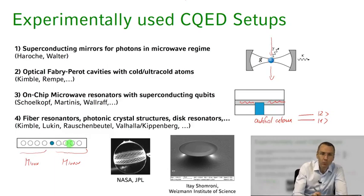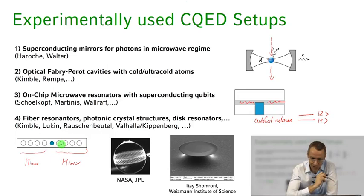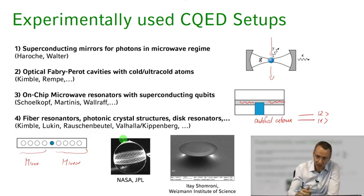Even more beautiful structures include whispering gallery mode resonators, where you take a small bead of super-pure glass formed by a laser pulse and the light field propagates along the rim of this glass bead. There is a beautiful picture from NASA showing light coupled into such a whispering gallery mode resonator, with the light field propagating around the glass sphere.